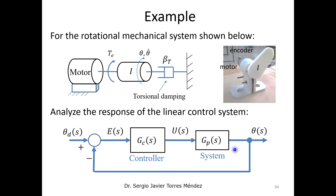Now suppose we want to use a linear control system. As an input we have the desired position, and from the output we have a feedback signal used to compare with the desired position in order to generate an error. That error is used by the controller block, which generates an output as an input to the system or plant — in this case the rotational mechanical system — making this a closed-loop system.